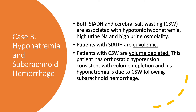Both SIADH and cerebral salt wasting are associated with hypotonic, hypoosmolar hyponatremia. Both have high urine sodium and high urine osmolality. How do we tell them apart? Patients with SIADH are euvolemic by definition, while patients with cerebral salt wasting are volume depleted. This patient has orthostatic hypotension because he is volume depleted. This hyponatremia is due to cerebral salt wasting following subarachnoid hemorrhage. Once you see a case like this, you'll find yourself giving a lot of sodium — whether as 0.9 saline or 3%.